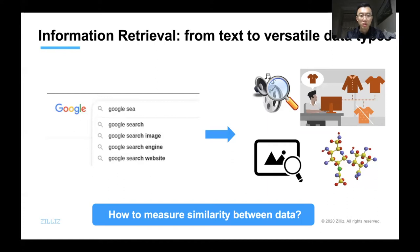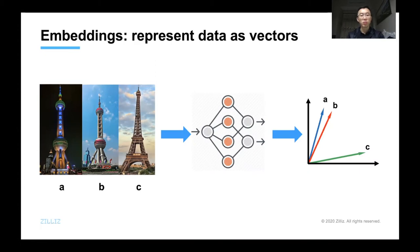For all these examples of modern information retrieval applications, they all share a common problem: how to measure the similarity between data. For example, how to tell whether two images or two molecular structures are similar. This is where vectors come in, thanks to representation learning or what we call embedding techniques. Almost everything can be transformed to vectors.